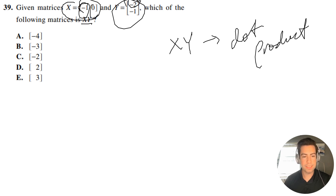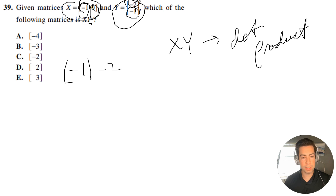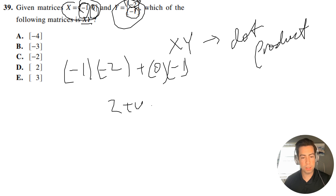Then you're going to take the second term and multiply it with its corresponding second term in the second matrix. So what we're going to have here is negative one times negative two, plus zero times negative one. And this is just going to be two plus zero, which is just two.